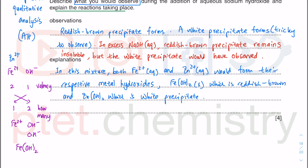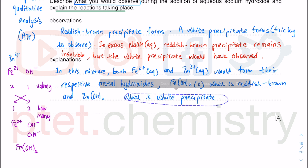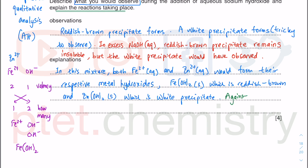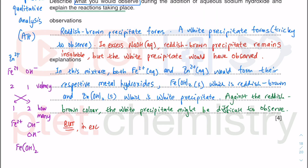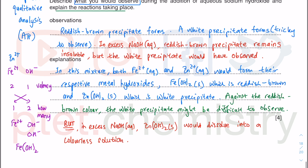The white zinc hydroxide precipitate might be difficult to observe against the reddish-brown colored background. But in excess NaOH aqueous, the zinc hydroxide would dissolve — the zinc hydroxide precipitate would dissolve into a colorless solution. They are asking for explanations.